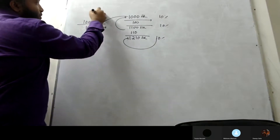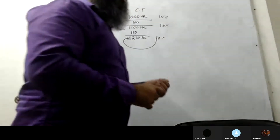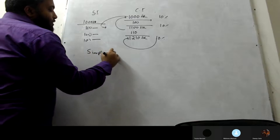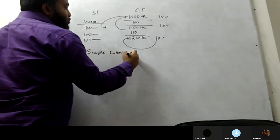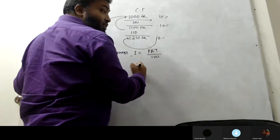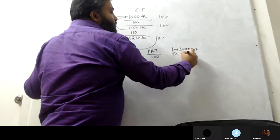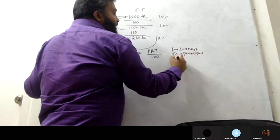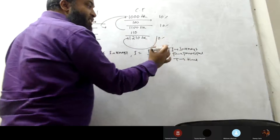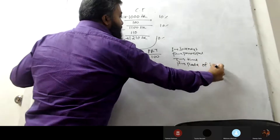Whether it is simple interest or compound interest, the basic formula for simple interest is: I equals P times R times T, divided by 100. Here, I represents interest, P represents principal, R represents rate, and T represents time.